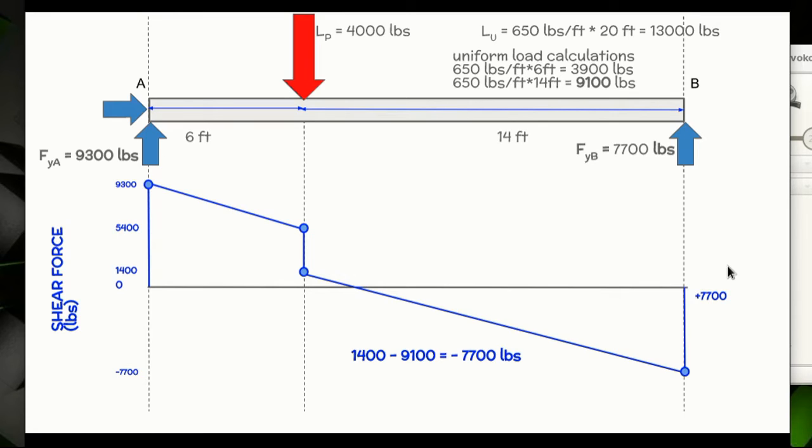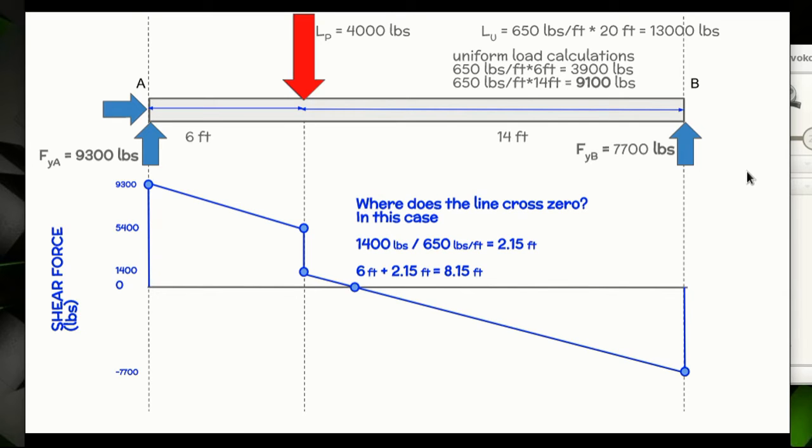One of the things we need to understand here is where the line crosses 0. In this case, we know this point is 1,400 pounds, and from here to this point it's gaining weight at 650 pounds per foot. If we do a little bit of math here, we can find that this distance is 2.15 feet, and we know it's 6 feet from this side, so 6 plus 2.15 is 8.15 feet. We know that the rest of the beam from this point is 11.85 feet.